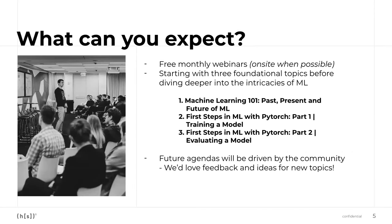What can you expect? The schedule is fixed for the first few lectures. The first one is about the past, present, and future of machine learning. Then we'll have two sessions around the first steps in machine learning — how to train a model, using Python and PyTorch. One lecture focuses on the steps to train a model, and the next on how to evaluate it. Lectures are monthly, and future agendas will be driven by your feedback.